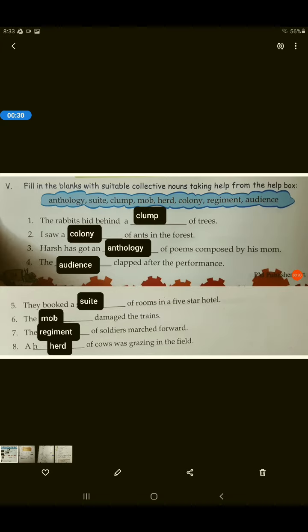This is the answer for your question number 5. The rabbits hid behind a clump of trees. Clump is called a collection of trees. I saw a colony of ants in the forest. Harsh has got an anthology of poems composed by his mom. Anthology ka matlab hota hai, a collection of literature. Kisih bhi type ke literature ka collection ko hum anthology kehte hai.